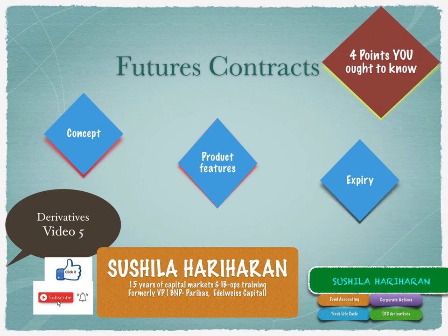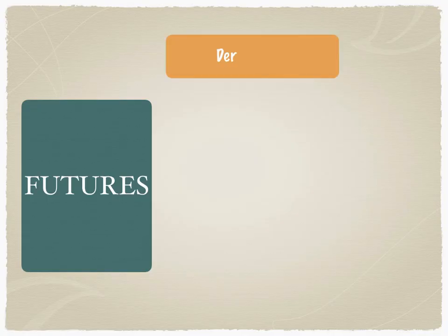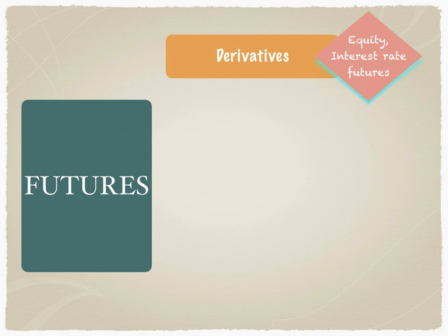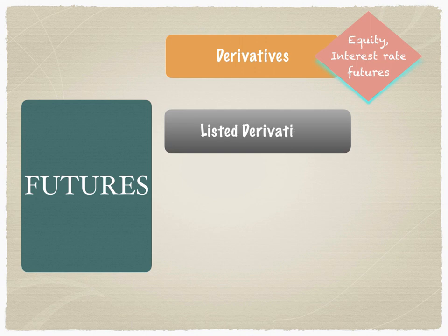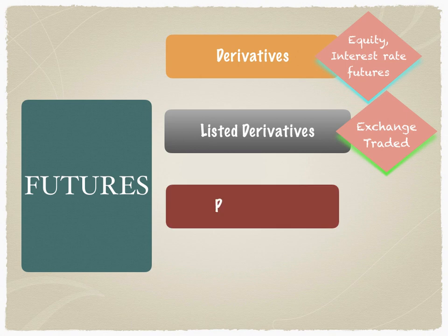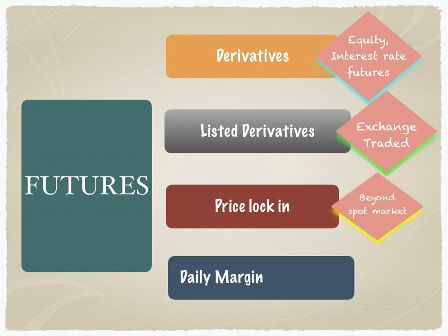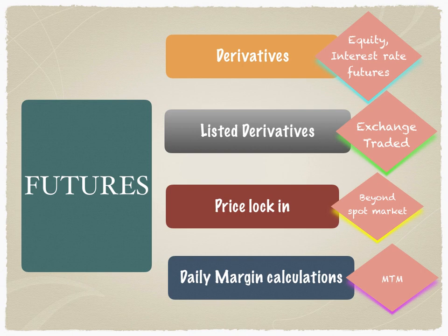If you're interested in a career in fund accounting, corporate actions, trade life cycle, and OTC derivatives — futures contracts are derivatives, implying they could be equity derivatives or interest rate futures. Futures are listed derivatives, meaning they are exchange-traded products. The futures contract implies that the price is locked in beyond the spot market, and since it's a highly leveraged product, there are daily margin calculations called mark-to-market or MTM.